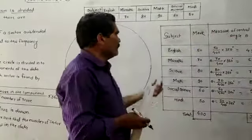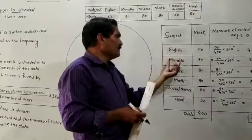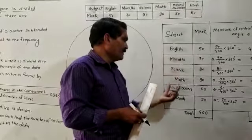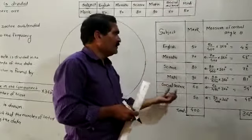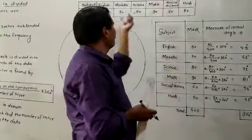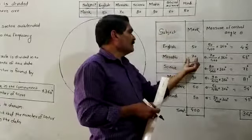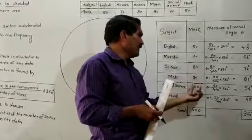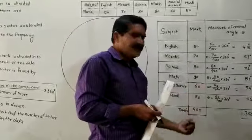The subjects are: English, Marathi, Science, Maths, Social Studies, and Hindi. The marks (frequencies) are 50, 70, 80, 90, 60, and 50 respectively. The total is 400.